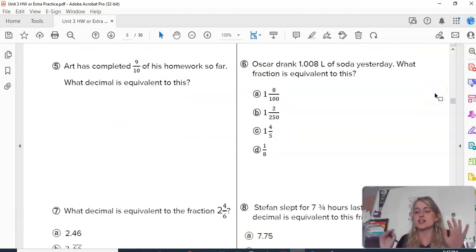Art has completed nine-tenths. It's already in tenths. We don't even need to divide it. It's in the right place value. You can just write that as a decimal.